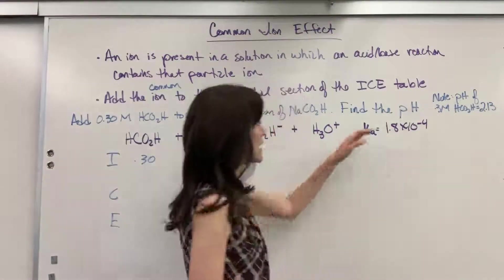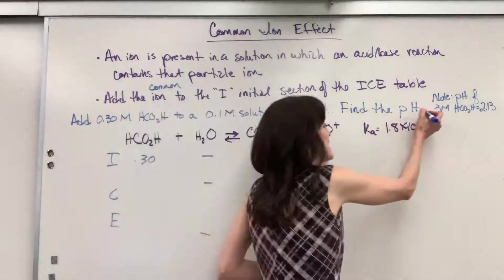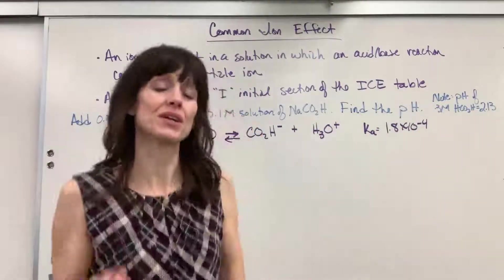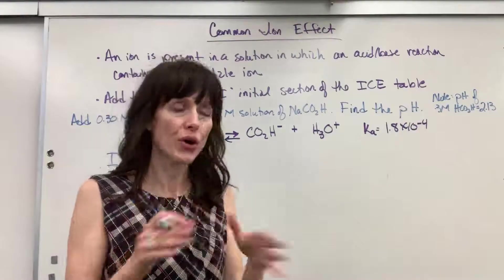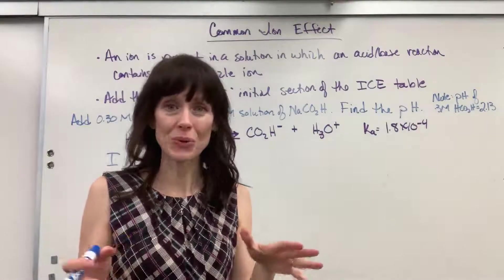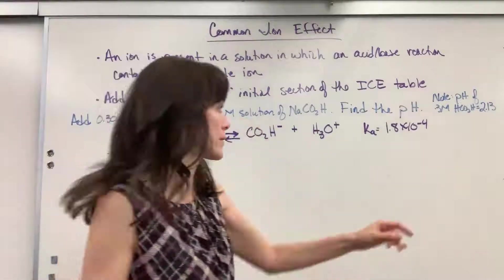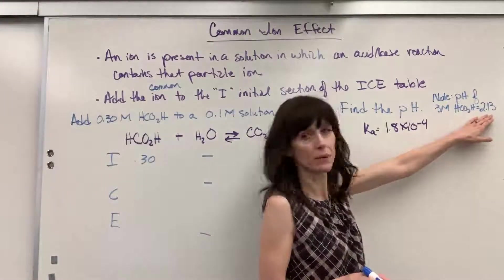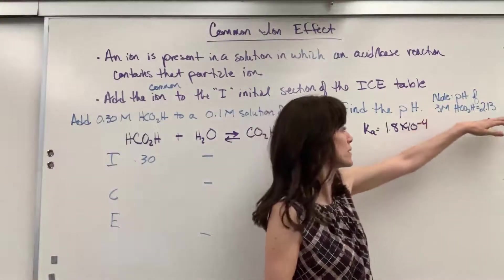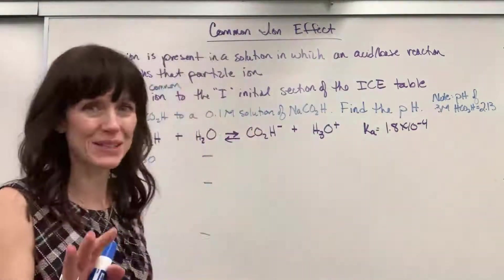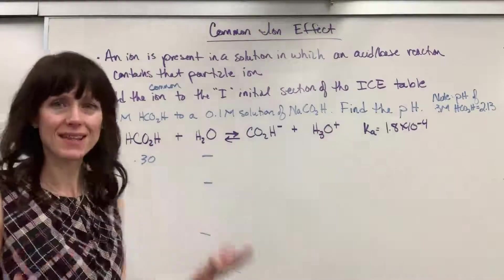Now, the problem wants us to calculate the pH. I have put down, if I had pure formic acid, no formate ion, no common ion, if I just took formic acid added it to water, the pH would be 2.13. If my molarity was 0.3, the pH would be 2.13. Keep that in your mind. So let's go ahead and set this up.